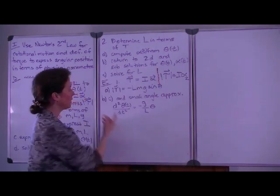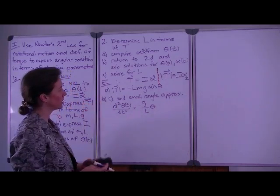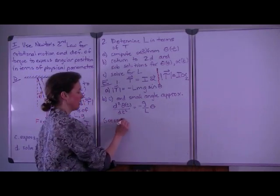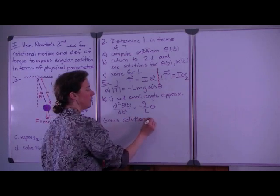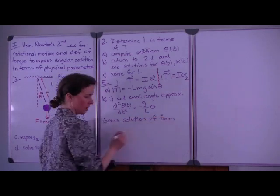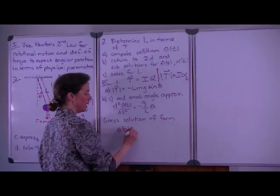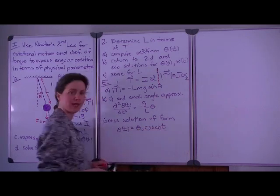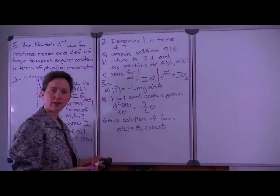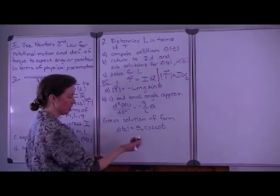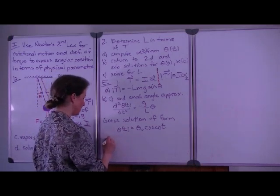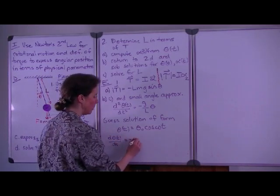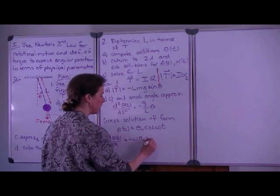I'm back having consolidated what we've done so far. We can guess a solution to this differential equation of the form theta as a function of time equals theta0, the initial value, times the cosine of the angular frequency times time. Once we have the position as a function of time, we can take the second derivative and achieve the acceleration as a function of time. So the first derivative with respect to time gives us minus omega times theta0 times the sine of omega t, and the second derivative gives us minus omega squared theta0 cosine omega t.